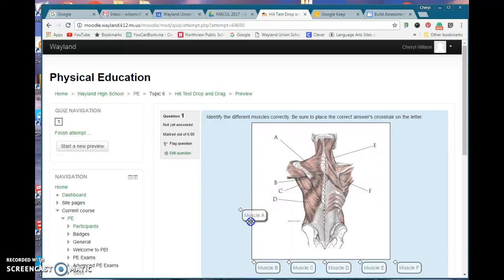Now I made it easy: Muscle A. Do you see the crosshairs? The crosshairs need to be within a certain area up there to answer, and then Muscle B.